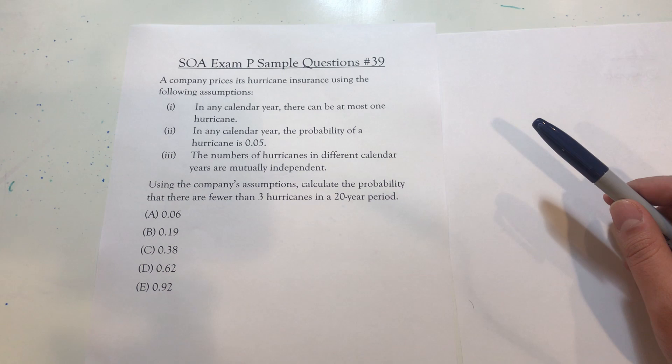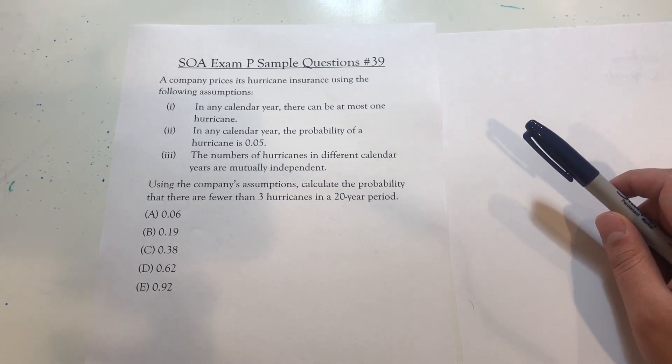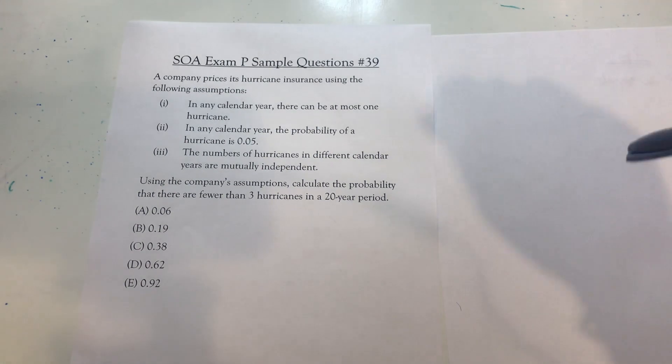A company prices its hurricane insurance using the following assumptions: In any calendar year, there can be at most one hurricane. In any calendar year, the probability of a hurricane is 0.05. And last, the number of hurricanes in different calendar years are mutually independent.